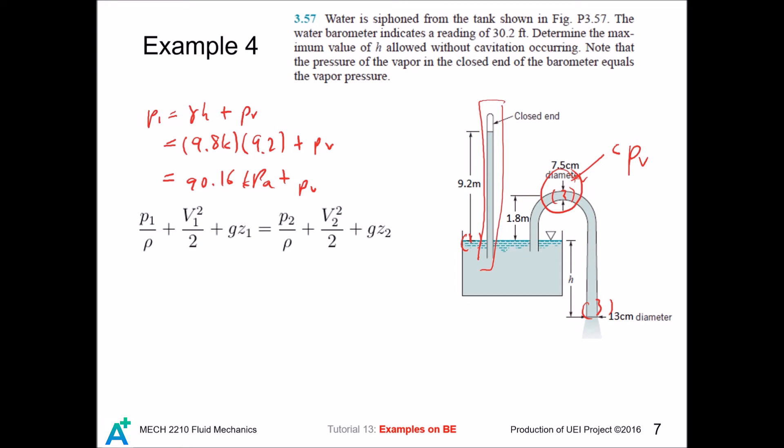And clearly, the Bernoulli equation is applicable here. We first compare points 1 and 2. We set z1 as the datum. Since point 1 is quite far away from the siphon, we can take its velocity as 0. And then we use point 1 as 0, so this goes 0. We require that p2 is the vapor pressure. Then we plug in what we have. Point 2 is 1.8 meters above point 1. This cancels out, this also goes away, and then we can solve for v2.